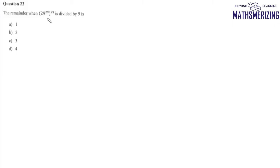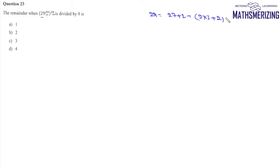Question number 23: find the remainder when 29 to the power 29 to the power 29 is divided by 9. We'll use a shortcut — express 29 as 27 plus 2, where 27 is 9 times 3, which is a multiple of 9. So we can write this number as 9 times 3 plus 2, to the power 29 to the power 29.